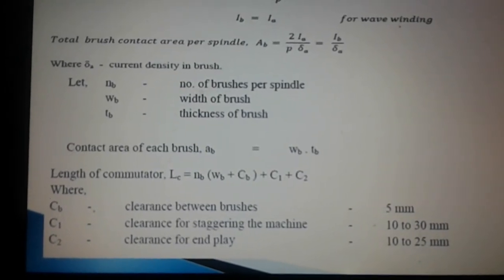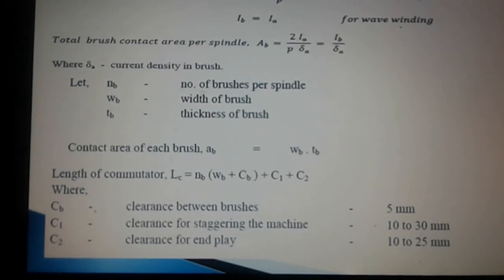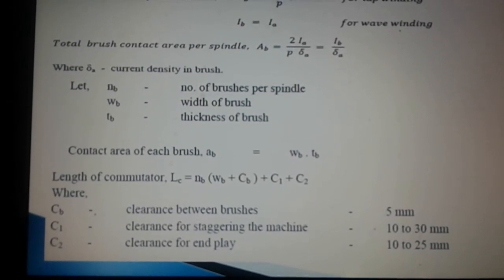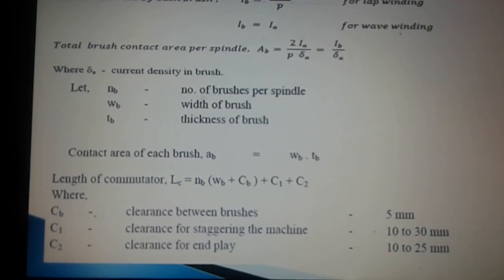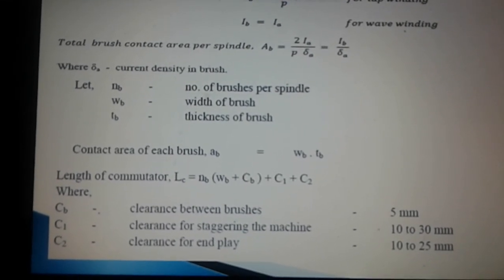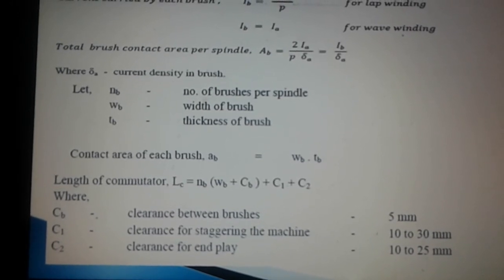C1 is the clearance for staggering and C2 is the clearance for end play. The values lie between 10 to 30 mm for staggering and 10 to 25 mm for end play clearance. The clearance between brushes is 5 mm.